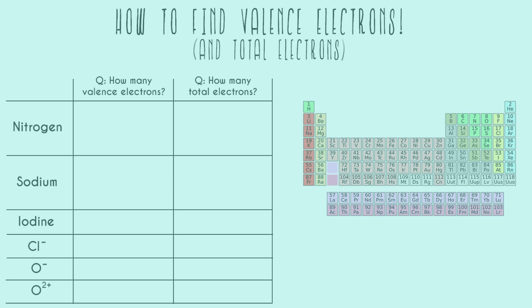In this video I'm going to go over how to find valence electrons and total electrons. They're two slightly different concepts and it's important that you know the difference between both of them and how to find both of them for any given element or ion.